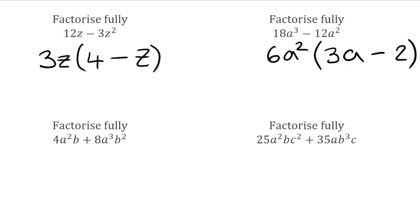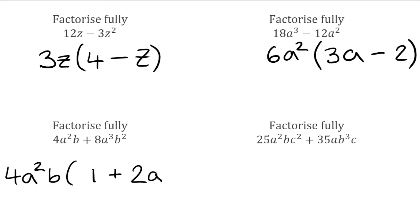For the next question, we have 4a squared b plus 8a cubed b squared. Looking at the number parts, 4 and 8 — the highest common factor is 4. We have a squared and a cubed, so the lowest power is a squared, which we take on the outside. We have b on the left and b squared on the right, so the lowest power is b. Opening the bracket: for the first term, we need 4a squared b, but we already have 4a squared b on the outside, so inside I just put 1. Then plus: for 8, that's 4 multiplied by 2; for a cubed, we've got a squared so we multiply by another a; for b squared, we've got b so we multiply by another b. So the 4 times 2 is 8, a squared times a is a cubed, and b times b is b squared.